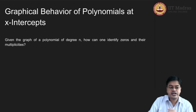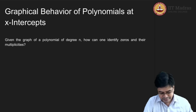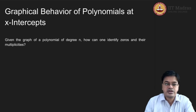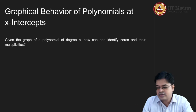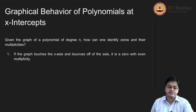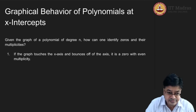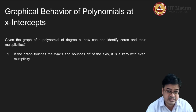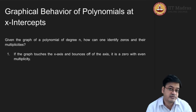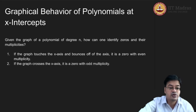Given a graph of a polynomial of degree n, we want to identify the zeros and their multiplicities. We look at all coordinates where the graph touches the x-axis. If the graph touches the x-axis and bounces off, then it is a zero with even multiplicity. If the graph actually crosses the x-axis, it is a zero with odd multiplicity.